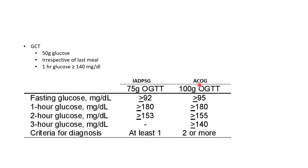Now let us see about ACOG guidelines. ACOG recommends a 100 gram oral glucose tolerance test. We give 100 gram of oral glucose after overnight fasting and measure blood glucose in fasting state, after 1 hour, 2 hours, and 3 hours. The criteria for diagnosis is 2 or more values should be abnormal. The cutoffs are: fasting glucose greater than or equal to 95 mg/dL, 1-hour glucose greater than or equal to 180, 2-hour glucose greater than or equal to 155, and 3-hour glucose greater than or equal to 140 mg/dL.